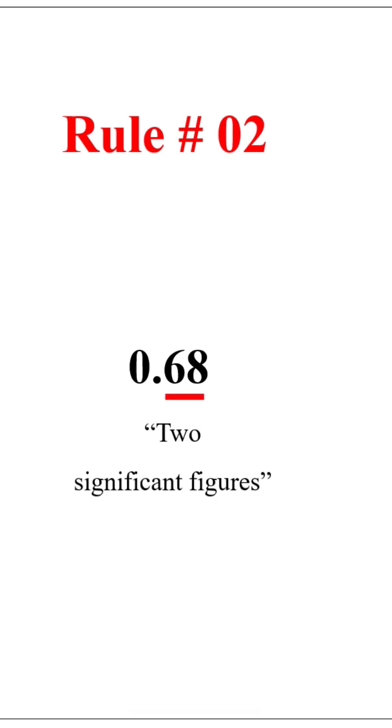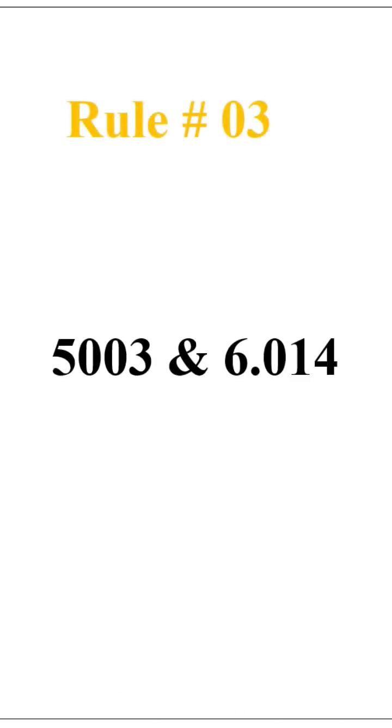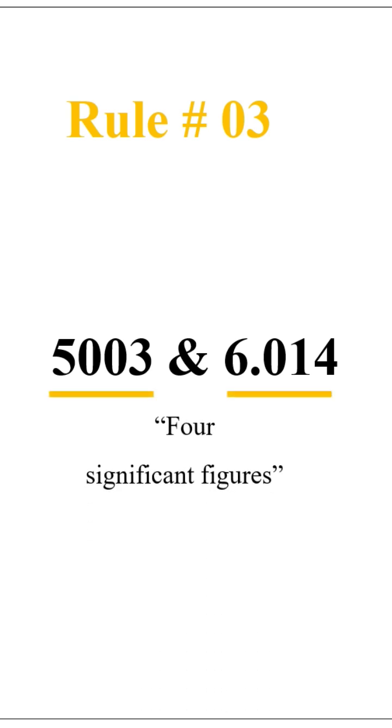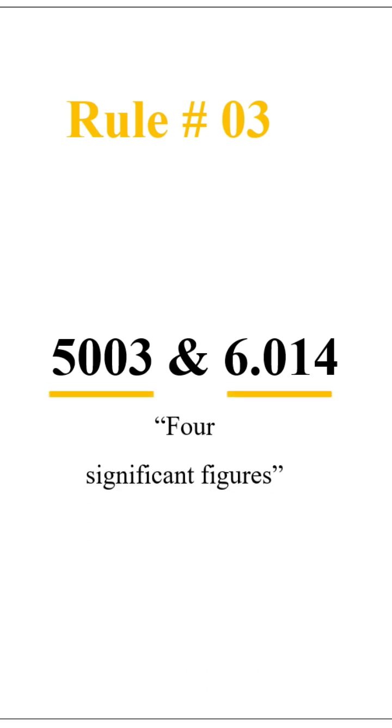Rule number two: zeros at the starting of a number are not significant. For example, 0.68 has only two significant figures. Rule number three: zeros between non-zero digits are significant. For example, 5003 and 6.012 — all digits are significant figures.